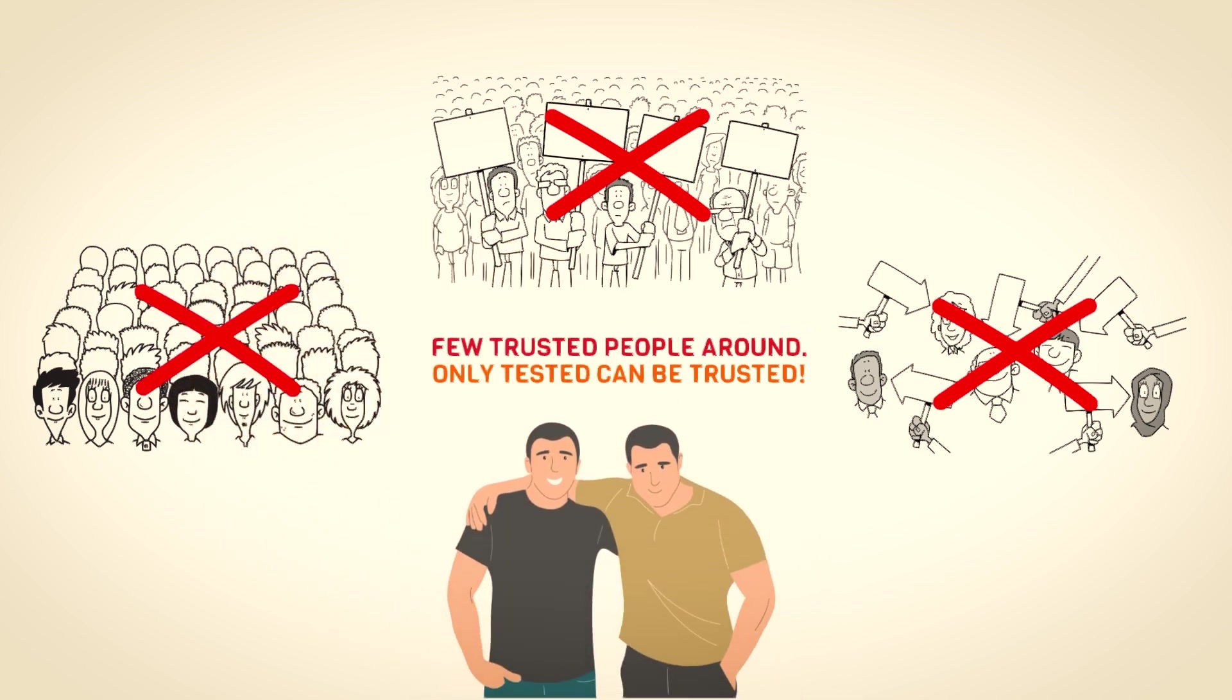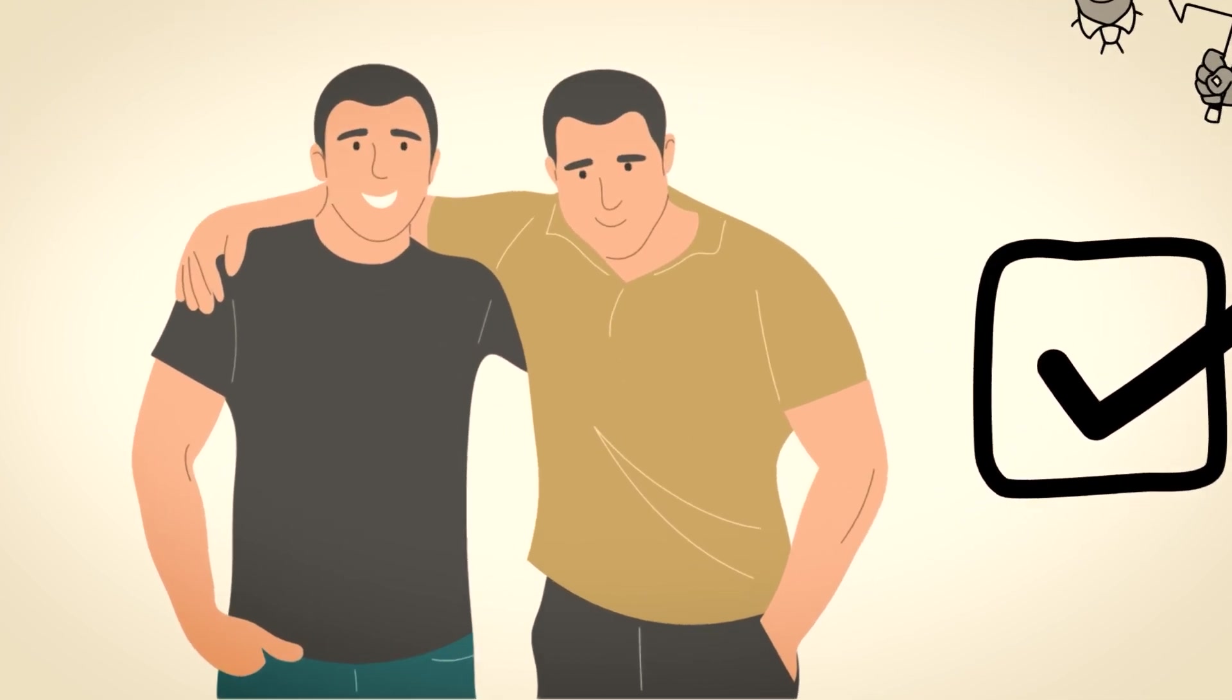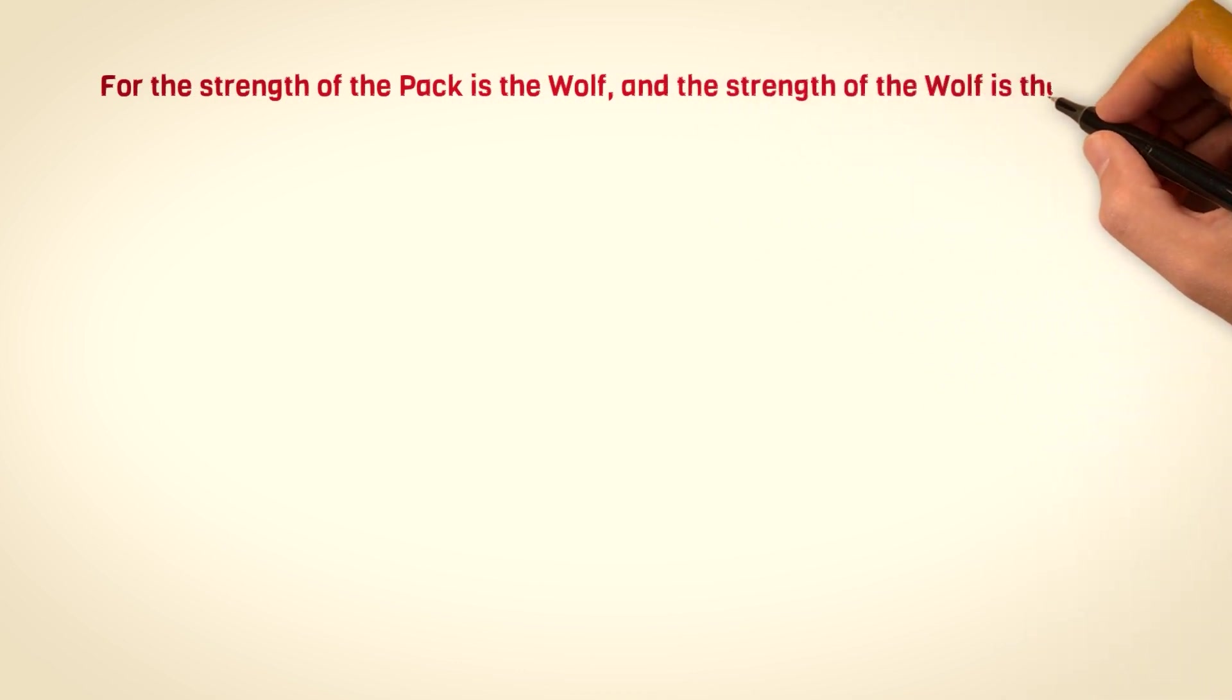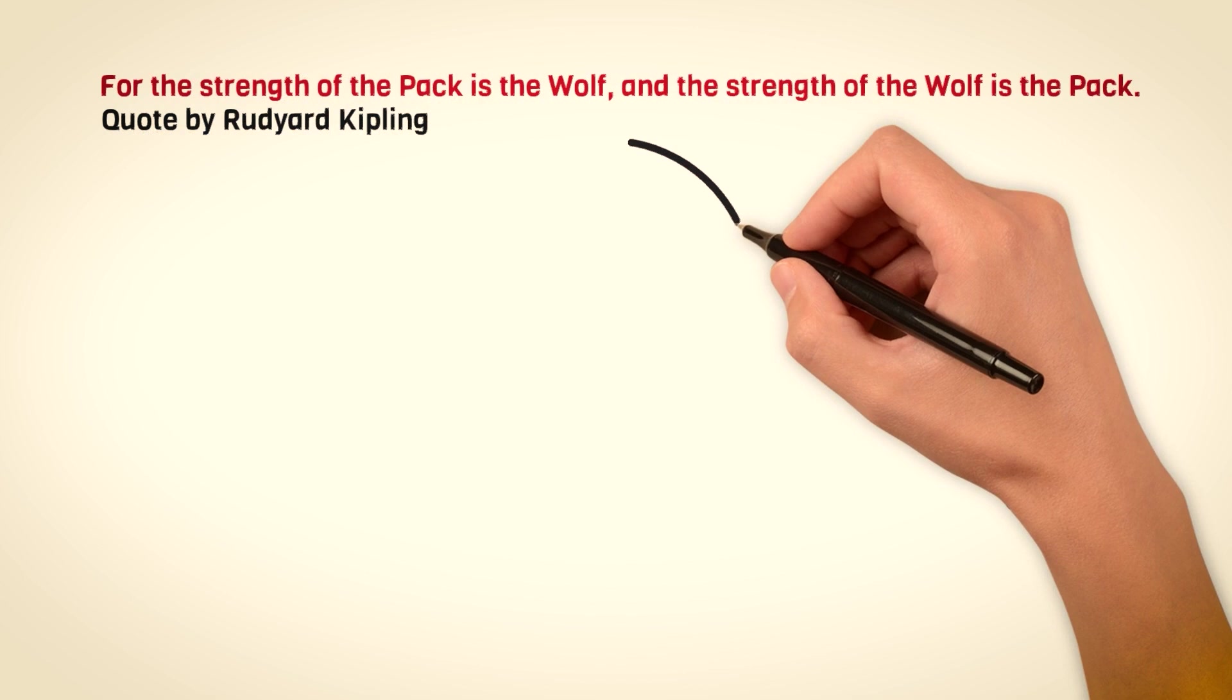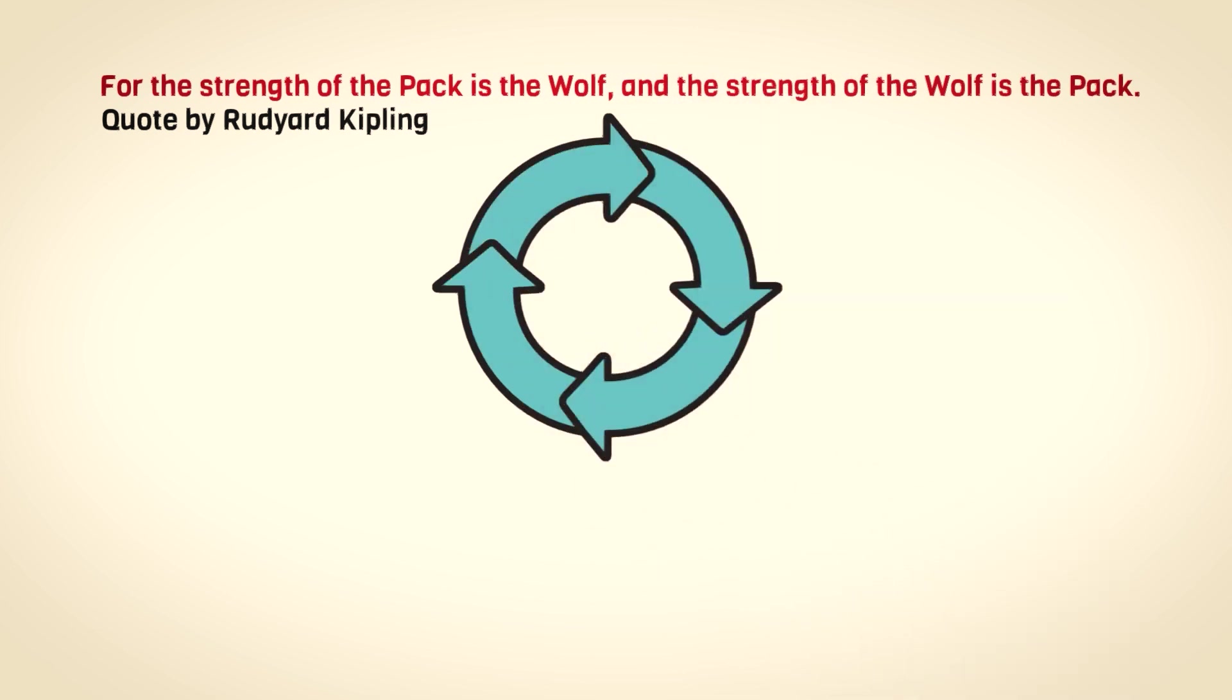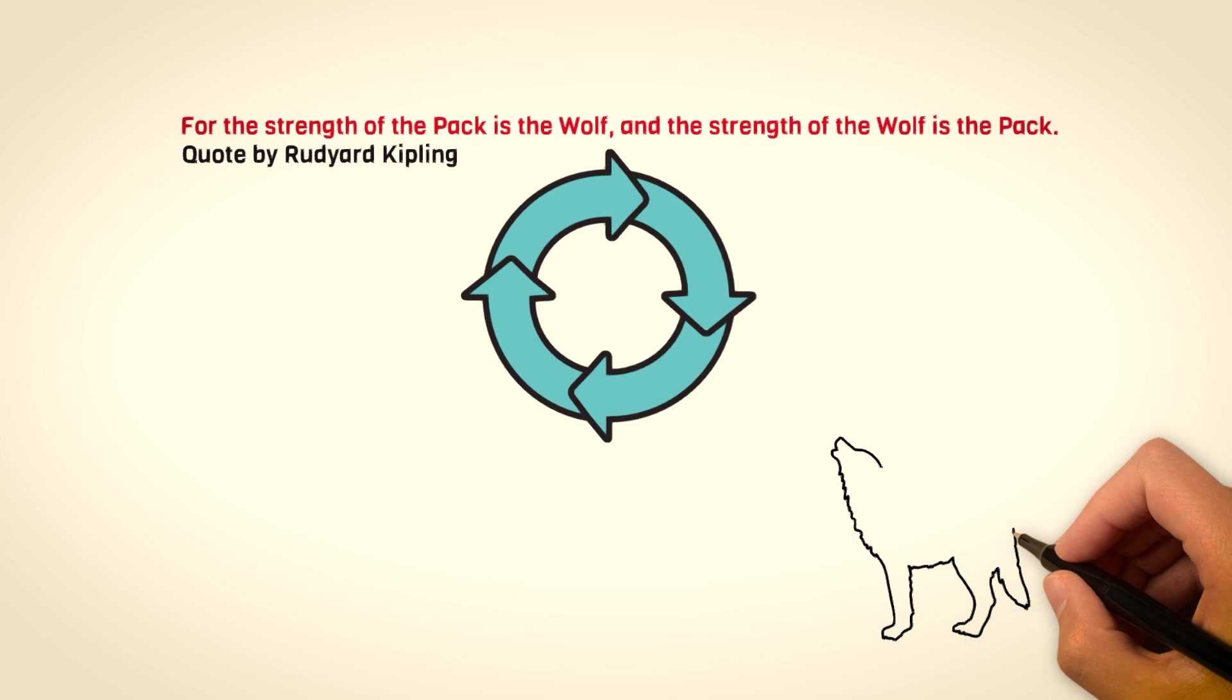They prioritize deep and meaningful connections over a vast network of acquaintances. They value authenticity, vulnerability, and shared values in their relationships. They prefer to have a small circle of individuals with whom they can have profound conversations, engage in intellectual pursuits, and explore their passions. Sigma males value the depth of the connection, rather than the number of connections they have, which naturally leads to a smaller circle of trust.